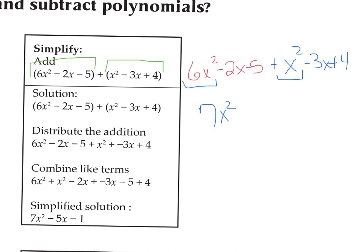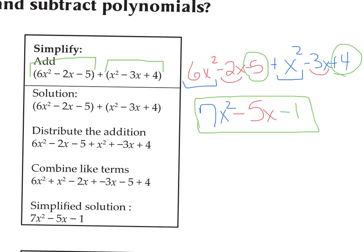Then we have the x terms: negative 2x and negative 3x. They're both negative, so we get negative 5x. And then the constant terms: negative 5 plus positive 4 makes negative 1. So this is our new trinomial — it's the sum of these two trinomials being added together.